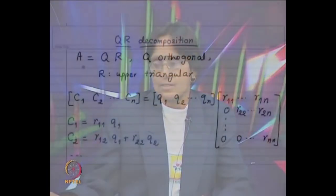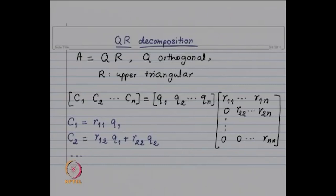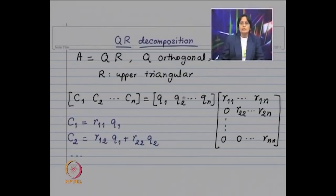Our matrix A is invertible; we want to write it as Q times R, where Q is an orthogonal matrix — that means Q transpose Q is identity — and R is an upper triangular matrix. C1, C2 up to Cn are columns of our matrix A, and Q1, Q2, Qn are columns of matrix Q. Q being orthogonal means the columns of Q form an orthonormal set.